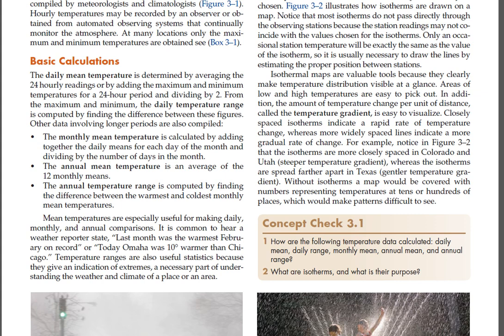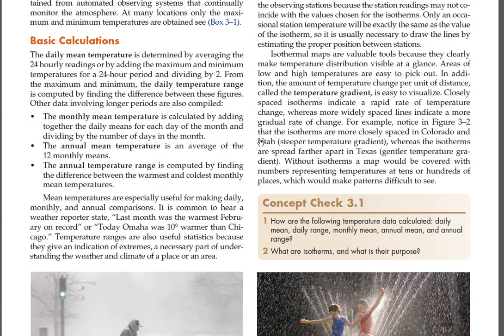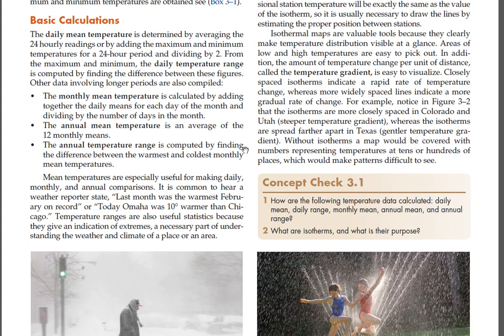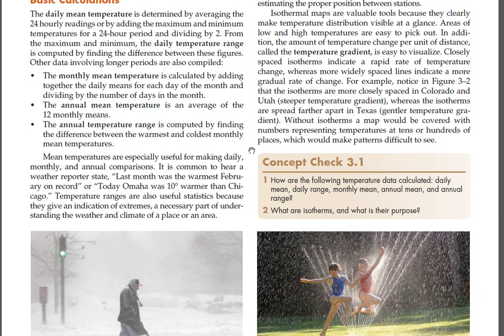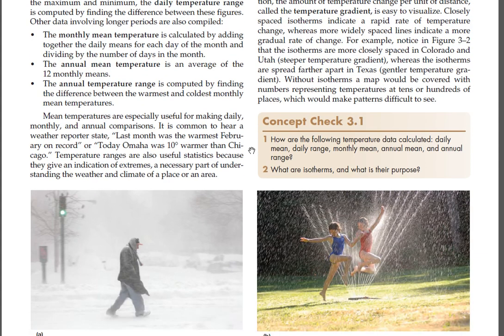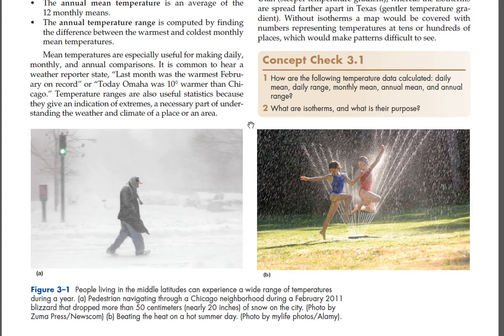Closely spaced isotherms indicate a rapid rate of temperature change, whereas more widely spaced lines indicate a more gradual rate of change. For example, notice in Figure 3-2 that the isotherms are more closely spaced in Colorado and Utah (steeper temperature gradient), whereas the isotherms are spread farther apart in Texas (gentler temperature gradient). Without isotherms a map would be covered with numbers representing temperatures at tens or hundreds of places, which would make patterns difficult to see.